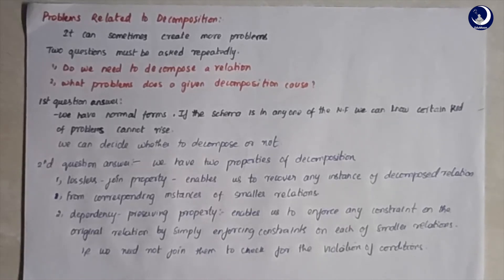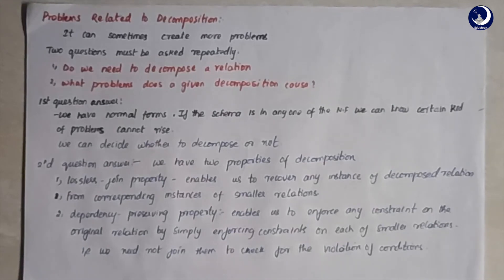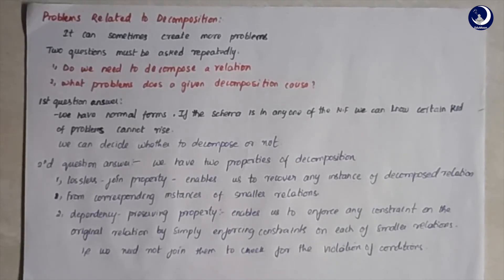For the second question — what problems might decomposition cause? — we look at two properties of decomposition. The first is the lossless join property: this enables us to recover any instance of the original relation from the corresponding smaller instances. That is, when we decompose a large relation R into R1 and R2, we should be able to rejoin R1 and R2 to get back R without any loss of data.